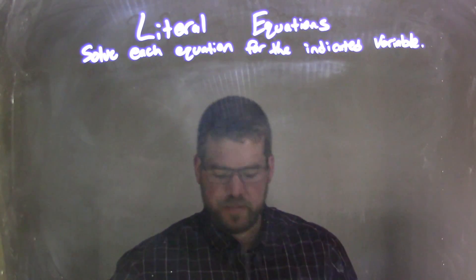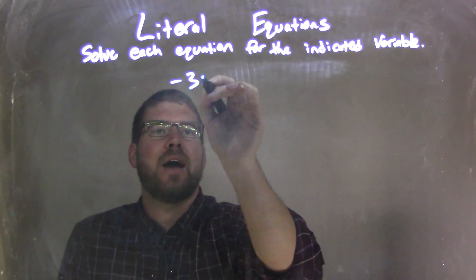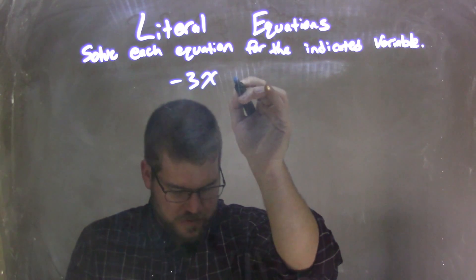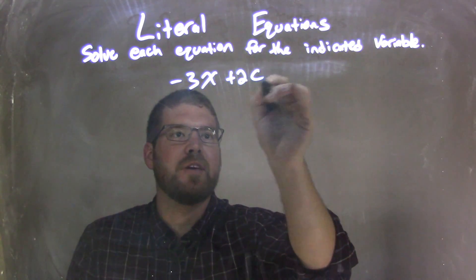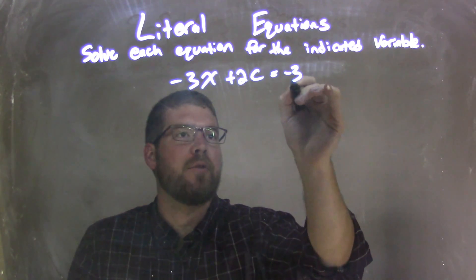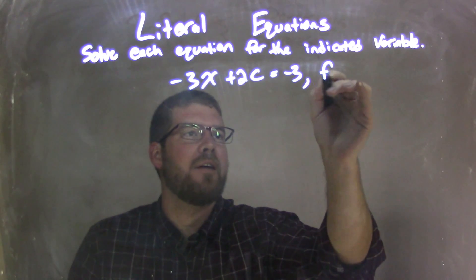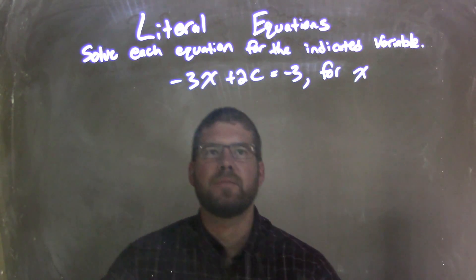So if I was given this equation — negative 3x plus 2c equals negative 3 — and we're solving that for x.